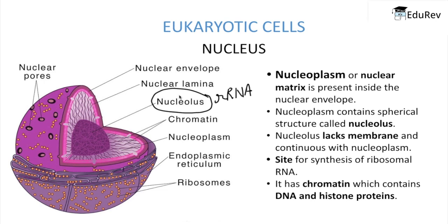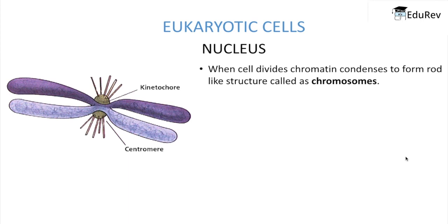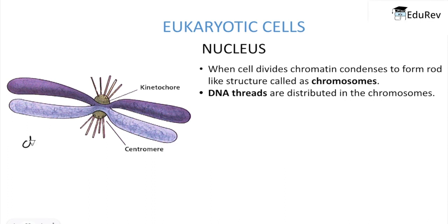Inside the nucleoplasm there are fiber-like long structures called chromatin, which contain DNA and various histone proteins. When the cell divides, this chromatin condenses to form a rod-like structure called chromosomes. DNA threads are distributed all along the chromosome, and we know that DNA is the genetic material.